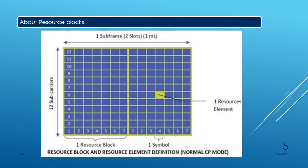The eNodeB takes care of resource allocation — that is, the number of resource blocks allocated to a user, which decides the throughput for that particular user. The minimum level of resource allocation is one resource block. The number of resource blocks allocated to a particular user will decide their throughput, as we will see in the coming slides.